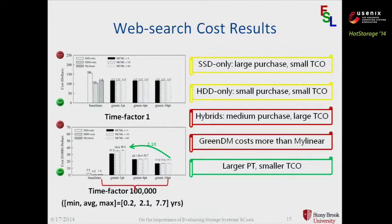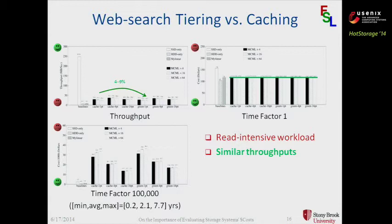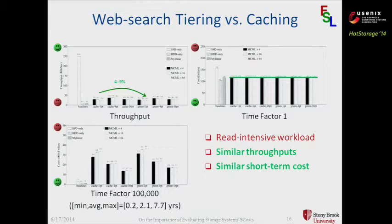Let's now take a look at the more complete tiering versus caching comparison. This is a read-intensive workload. We have three figures here: one throughput figure, one short-term cost figure, and one long-term cost figure. In terms of throughput, tiering and caching achieve similar throughput; caching may achieve slightly better throughput than tiering if the SSD in the tiering system contains cold data initially. When we look at the short-term cost, these two systems achieve similar short-term cost. The initial setup of those two systems is not that large, so the difference is not significant. We do believe that if the system scales much larger, the difference between the two systems will be more significant.